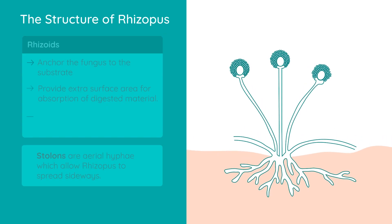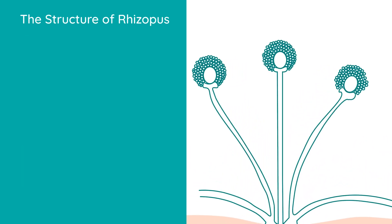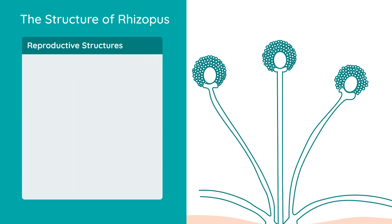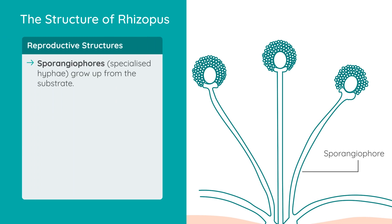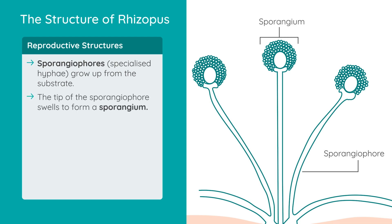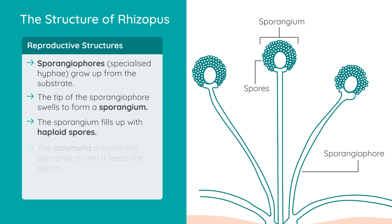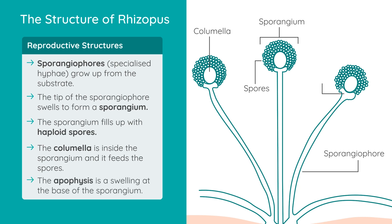Let's take a look at the reproductive structures of Rhizopus. After a few days' growth, some specialised hyphae called sporangiophores grow up from the substrate. The tip of the sporangiophore swells to form a sporangium, which then fills up with haploid spores — so the sporangium holds the spores. The columella is a structure inside the sporangium that feeds the spores, and the apophysis is a swelling at the base of the sporangium.